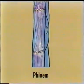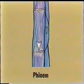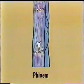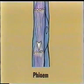Unlike the xylem cells, the phloem cells are living cells and have cross walls with pores. These allow liquid food to move downwards through the pores to all parts of the plant. We've looked at the transport system in plants. What about the system in animals?